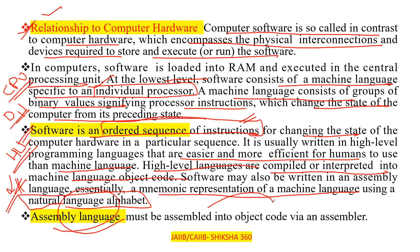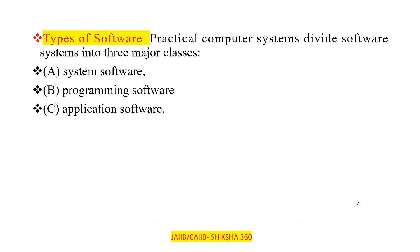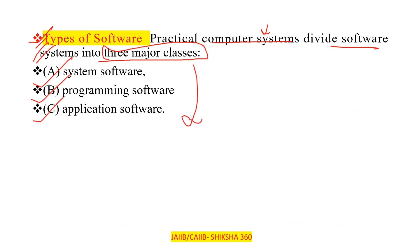Assembly language must be assembled into object code via an assembler, which converts it into binary code. Computer systems divide software into three major classes: system software, programming software, and application software.